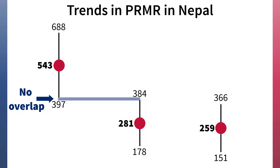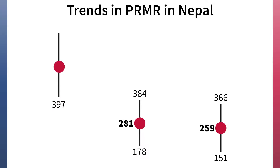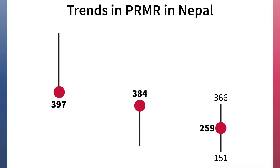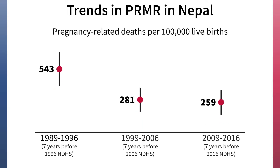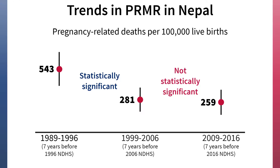When confidence intervals do not overlap, we can be reasonably confident that pregnancy-related mortality has actually changed. For example, even if the true PRMR in 1996 was at the lower end of the 95% confidence interval and the true PRMR for 2006 was at the upper end of the 95% confidence interval, we can conclude that pregnancy-related mortality did in fact decrease between 1996 and 2006. In the case of Nepal, the decrease between the 1996 and 2006 PRMR estimates is statistically significant, while the decrease between the 2006 and 2016 estimates is not statistically significant.